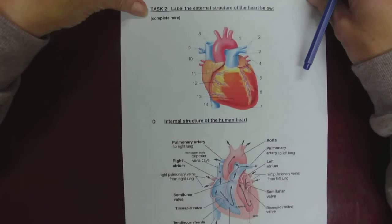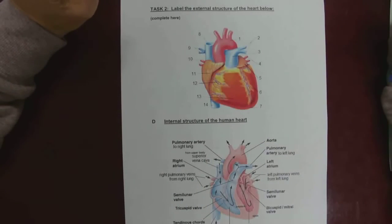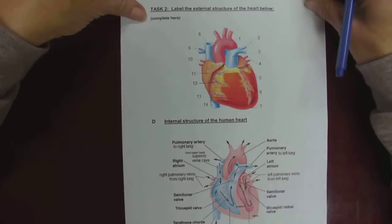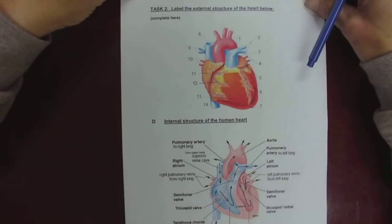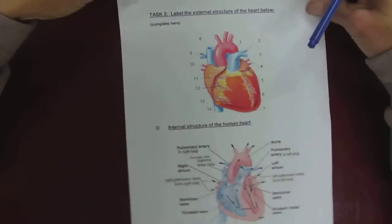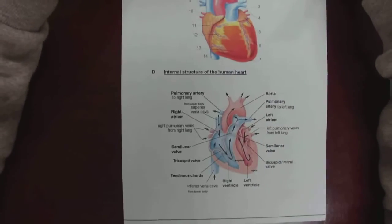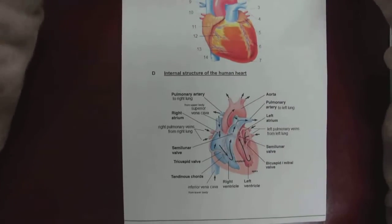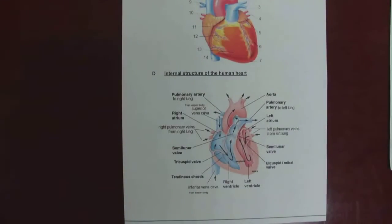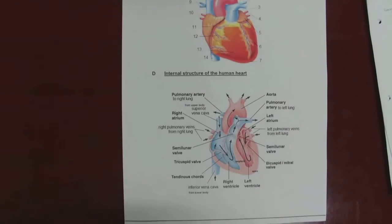So the external structure of the heart is quite difficult to see or to imagine what it looks like on the outside. I drew lots of arrows all over the place but just go through that again and think about it. Now what we're going to do is look at the internal structure of the human heart, and I think it's easier to try and figure out what's going on.